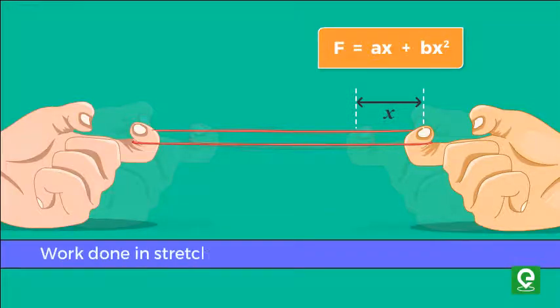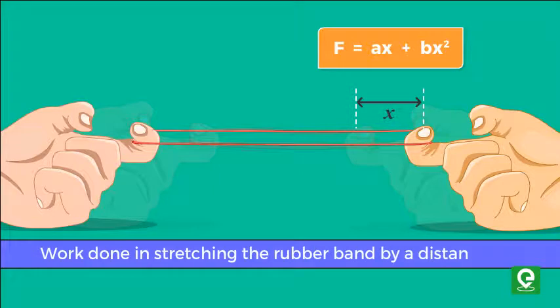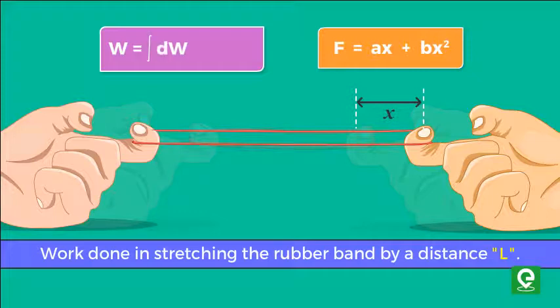We know that work done is equal to force into displacement. That is, for a small displacement dx, work done dW is equal to F·dx.